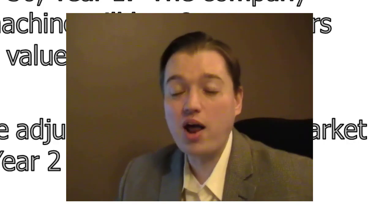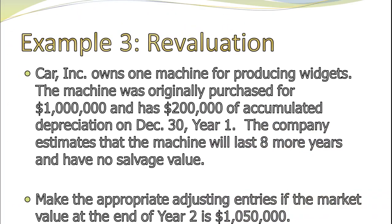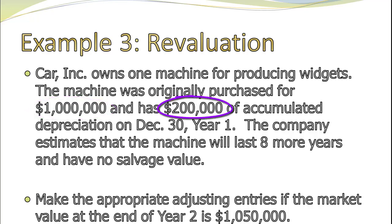We're going to start right off with year two. Same basic information as last time: it's Carr Incorporated, they have a machine that produces widgets. They spent a million dollars on it originally, had $200,000 of accumulated depreciation on December 30th of year one. They estimated the machine would last for eight more years including year one. It's now year two, we've done our tests, and we think this asset is now worth $1,050,000.